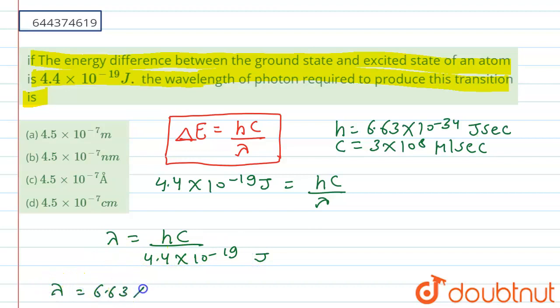So if we put the value of h here, that is 6.63 × 10^-34 × 3 × 10^8 meters per second...